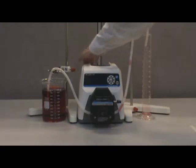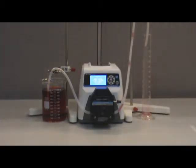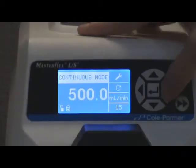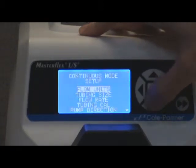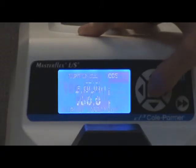The first thing that you will need to do is turn on the drive. Go to the main menu by selecting the setup icon and pressing the enter key. Use the up and down arrow keys until tubing cal is highlighted, then press the enter key.